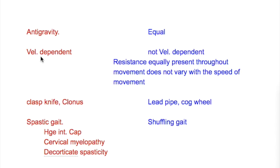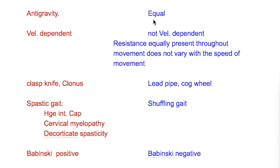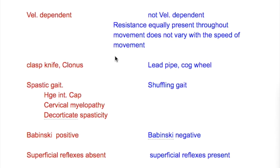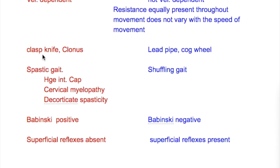Pyramidal disorders affect distal muscles, while extrapyramidal disorders affect proximal and axial muscles. Pyramidal disorders affect the anti-gravity muscles — the flexors of the upper limb and extensors of the lower limb — whereas extrapyramidal disorders equally affect both agonist and antagonist muscles. Pyramidal disorders are velocity dependent, whereas extrapyramidal disorders are not velocity dependent; resistance is equally present throughout the movement and does not vary with the speed of movement.